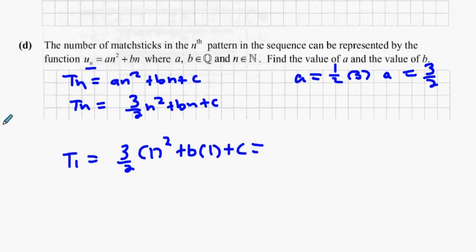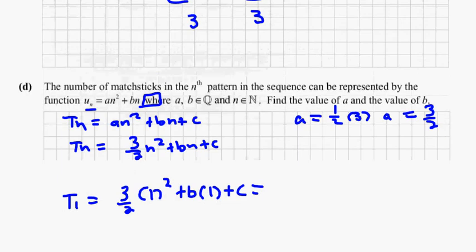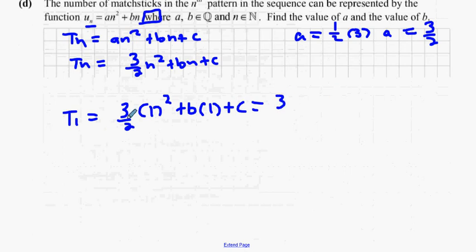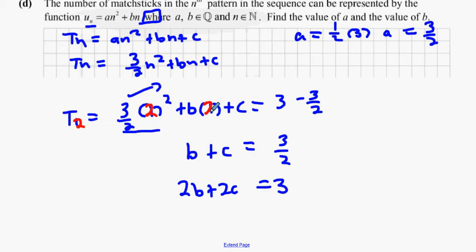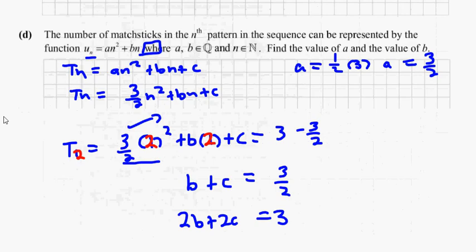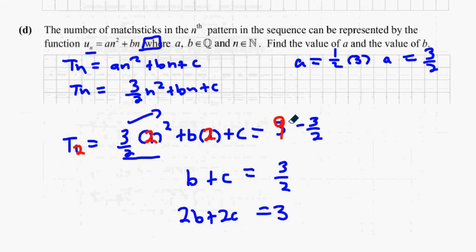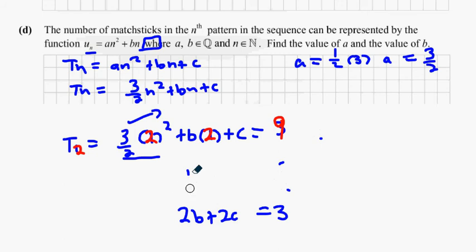The three over two gives one and a half. Bringing it over: b plus c equals three over two, which is the same as two b plus two c equals three. For t2, using twos instead of ones and nine instead of three: three times four is twelve, twelve over two is six. So six plus two b plus c equals nine, giving two b plus c equals three.